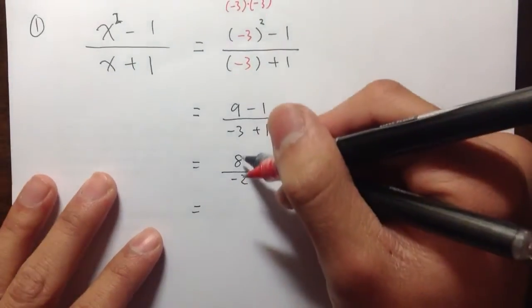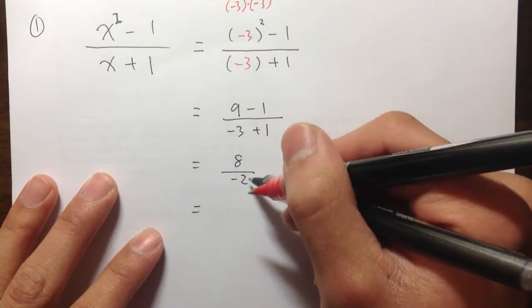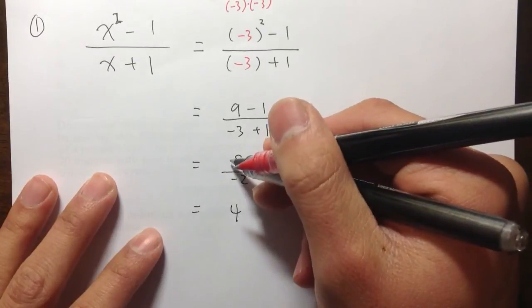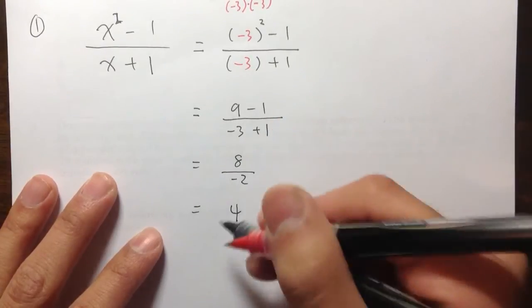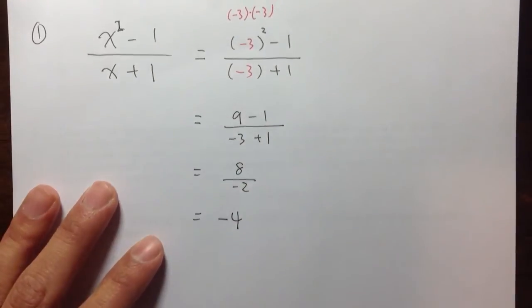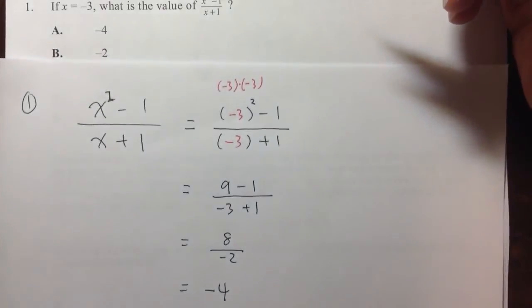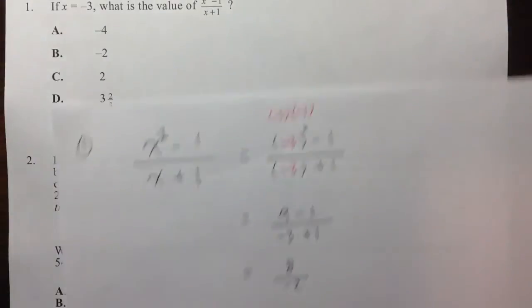And then, we just need to divide. 8 divided by 2 is equal to 4. But a positive number divided by a negative number is the result of a negative number. So we have negative 4 for the answer. And that's choice A.